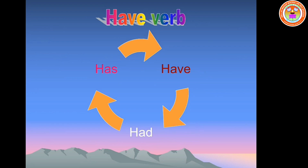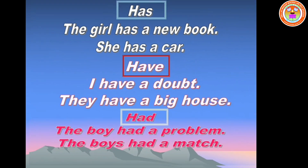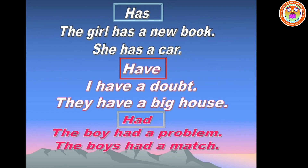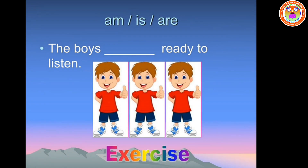Has is used with singular subject or singular pronoun. Have is used with plural subject or plural pronoun. Had is used with singular subject or singular pronoun. Example — has: the girl has a new book. She has a car. Have: I have a doubt. They have a big house. Had: the boy had a problem. The boys had a match.